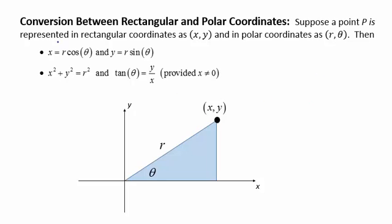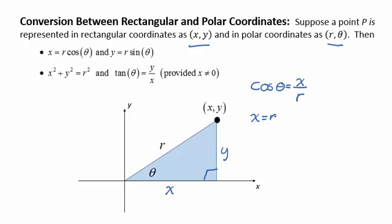Suppose that a point P in the plane can be represented by rectangular coordinates x, y and as polar coordinates r, theta. Then this point would live on one of the vertices of a right triangle. We could identify the sides of the triangle as having length x and y and hypotenuse r. Then, using the fact that it's a right triangle, the cosine of theta would be the adjacent side x over the hypotenuse, so that we could write x as r cosine theta.